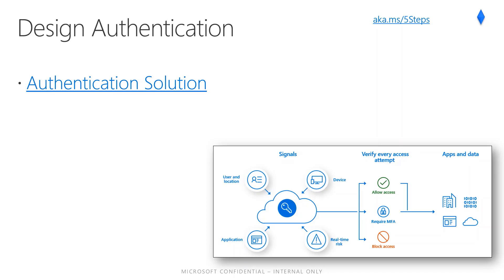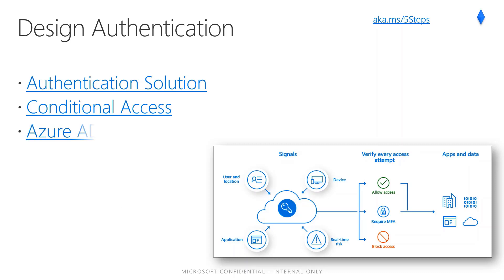Azure AD Identity Protection does require Azure Active Directory P2 licenses. Planning your conditional access deployment is critical to achieving your organization's access strategy for apps and resources. Azure Active Directory conditional access analyzes signals such as user, device, and location to automate decisions and enforce organizational access policies for resources. You can use CA policies to apply access controls like multi-factor authentication, prompting users for MFA when needed while staying out of users' way when not needed.